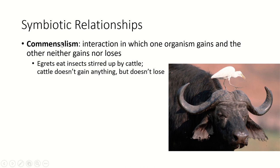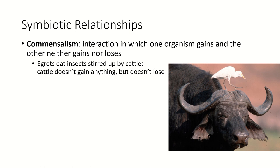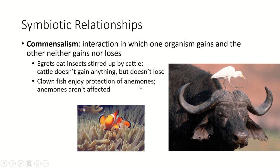Another form of symbiotic relationship is commensalism, where one organism gains and the other doesn't gain or lose — it doesn't affect the other organism at all. An example is egrets, which tend to hang out with wild or domestic cattle and often sit on them for a higher vantage point. What they're looking for are insects stirred up by the cattle walking around and eating grass. From their vantage point, the egrets can see insects fly up off the ground as the cattle move, and then eat those insects. It doesn't affect the cattle at all — the egret gains a lot; that's commensalism.